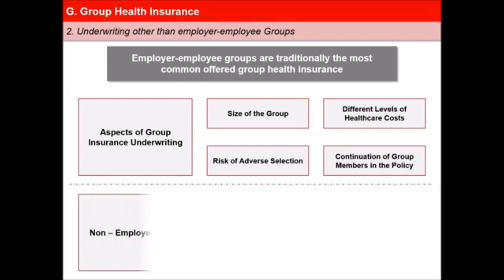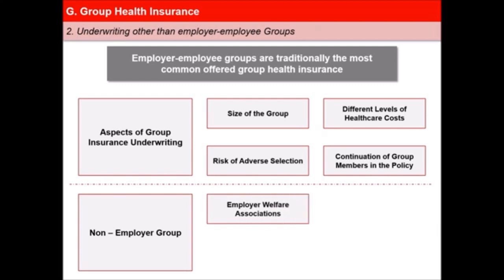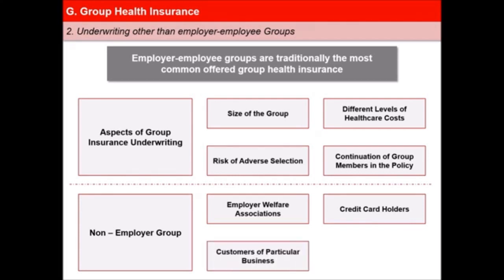There has been a growth in irregular types of group formations just to take advantage of group health insurance benefits at cheap prices, called groups of convenience. The insurance regulator IRDA has therefore issued group insurance guidelines with a view to regulating the approach to be adopted by insurers in dealing with various groups. Such non-employer groups include employer welfare associations, holders of credit cards issued by a specific company, customers of a particular business where insurance is offered as an add-on benefit, borrowers of a bank, and professional associations or societies.